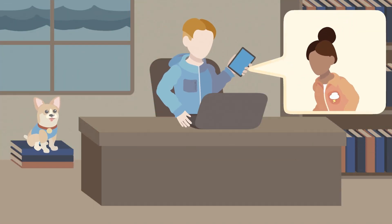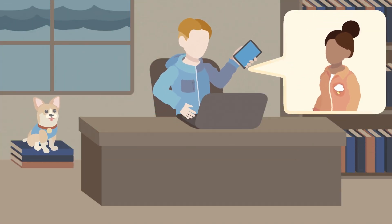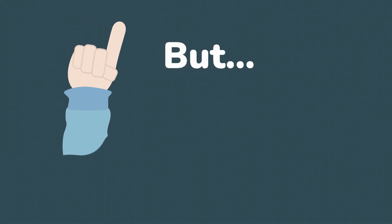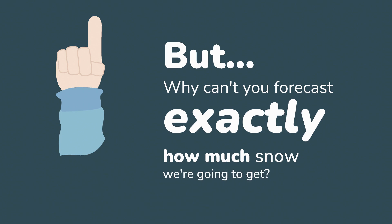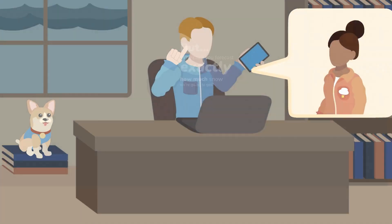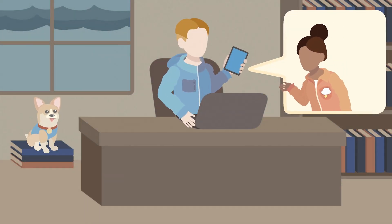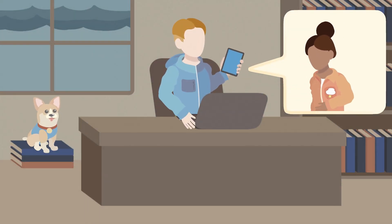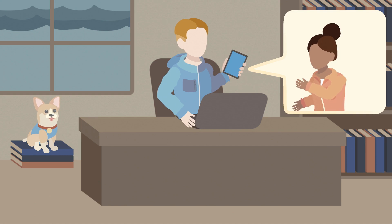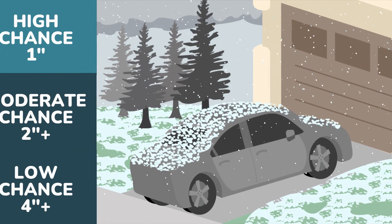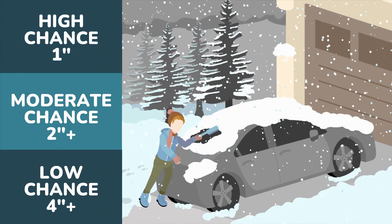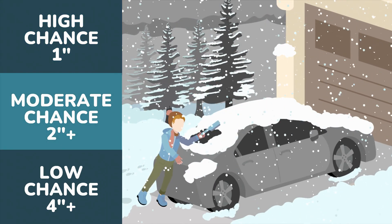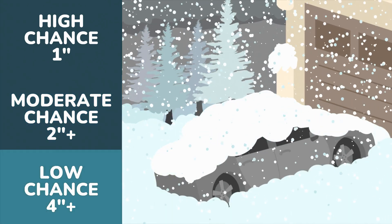I guess that actually could be pretty helpful. But with all this great new technology, why can't you forecast exactly how much snow we're going to get? This is a lot of extra information. It's true, the extra information looks a little more complicated than a single number, but it is helpful to make decisions. Since we can't know the exact future of the weather, we will often share information about the different possible outcomes, even those that might have a lower chance of occurring.